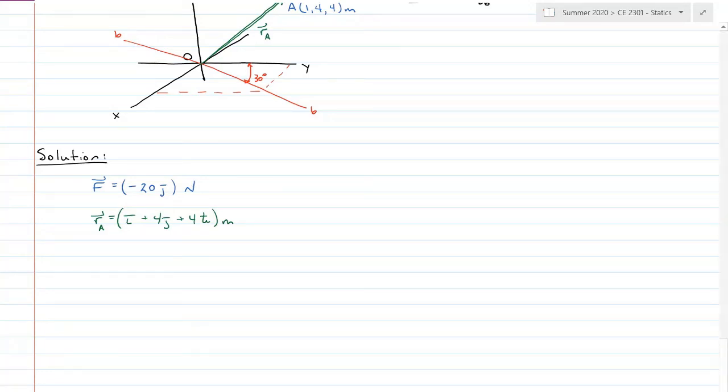Now I have a line of action here. It's 30 degrees off the y axis, and it acts on the xy plane. So the unit vector for BB is going to equal the sine of 30 degrees i plus the cosine of 30 degrees j.